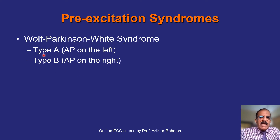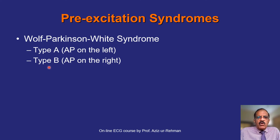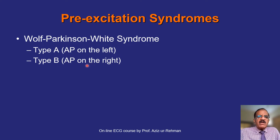There are two main types, Type A and Type B, and possibly Type C. In Type A the anomalous pathway is on the left side of the heart; in Type B it is on the right side; in Type C it is in the middle. The location translates into specific ECG changes, but clinically it doesn't matter much which type it is as long as you identify WPW syndrome.